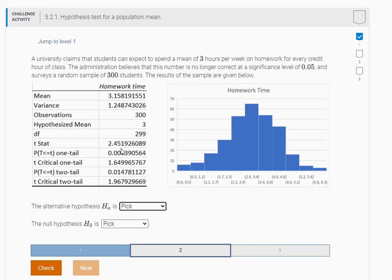At the 0.05 level of significance, they survey a random sample of 300 students. The results of the sample are given below. So again, you're given the output and you're given the histogram. So it asks, what is the alternative hypothesis here?